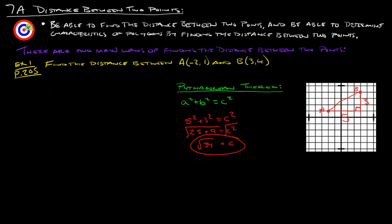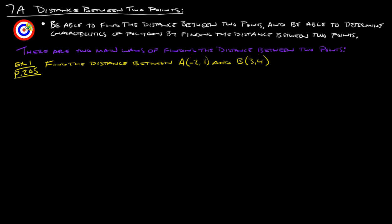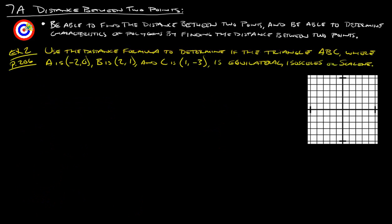Let's take a look at another example. Example 2 from page 206 says: use the distance formula to determine if triangle ABC, where A is negative 2, 0; B is 2, 1; and C is 1, negative 3; is equilateral, isosceles, or scalene. I'm going to do the Pythagorean theorem way because I find that a lot easier, especially when trying to determine what kind of triangle this is. So I'm going to graph these three points.